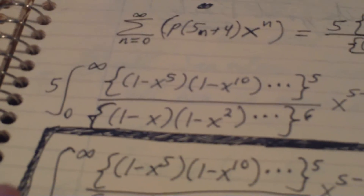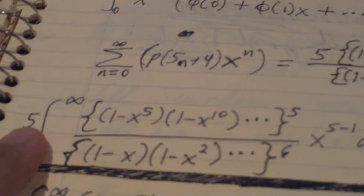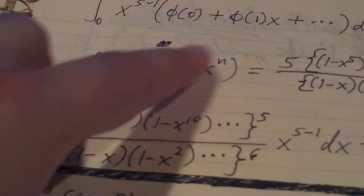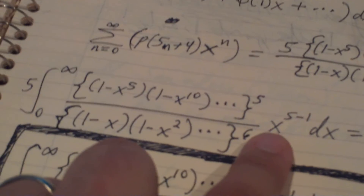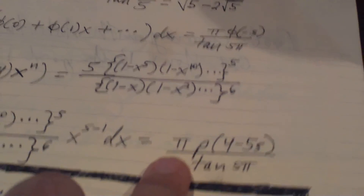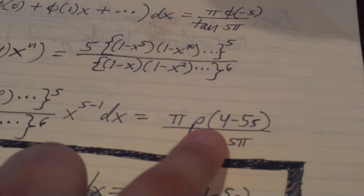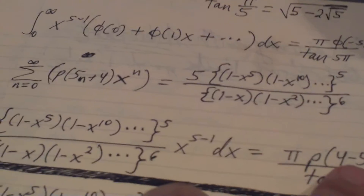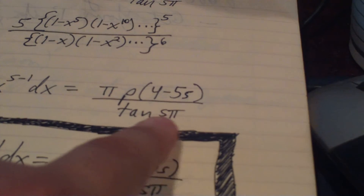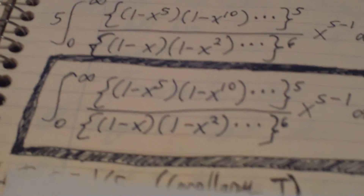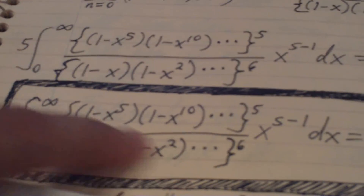So let's write down what we're going for here. We're going to evaluate the integral from zero to infinity — and remember we have a five out front because we're going to put this infinite series right in here — times x to the s minus one, which is the regular term for Ramanujan's Master Theorem. This is equal to pi times phi, where we substitute minus s into p of n for n. So what do we get? We get p(4 minus 5s) over the tangent of s pi. Once we rearrange that and take that five to the other side, we get the integral from zero to infinity of this huge infinite product is equal to pi over five times the partition of (4 minus 5s) over tangent of s pi.